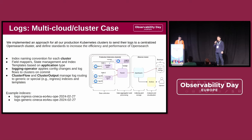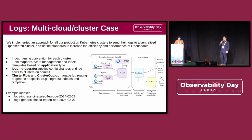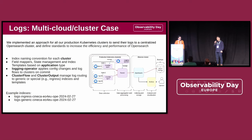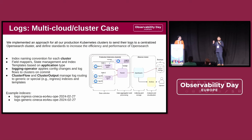Moving on to the multi-cluster case, we had to define some standards in order to keep things tidy. We have an observer cluster which hosts Thanos and OpenSearch, and the production clusters are sending logs to it. In order to keep things tidy on the OpenSearch cluster itself, we came up with some index naming conventions to send specific logs to specific indices. We also used field mappers, state management, and templates based on application types such as Ingress and Nginx. We adopted a dynamic approach where the logging operator manages all FluentD, FluentBit, and cluster flows, so that when we push a new cluster flow, it will automatically propagate to all the clusters.